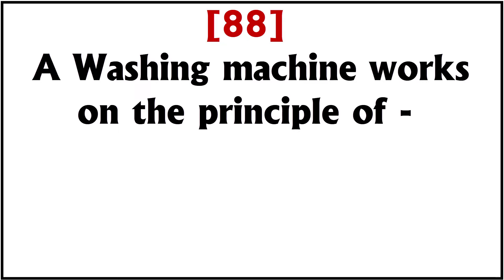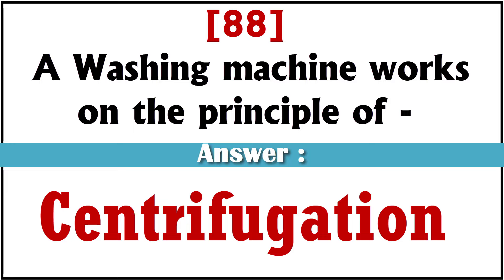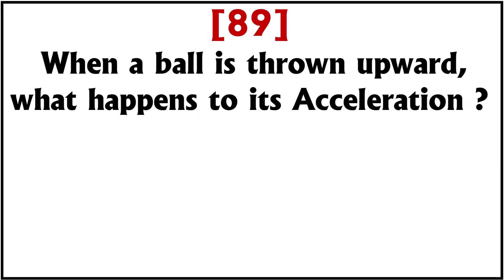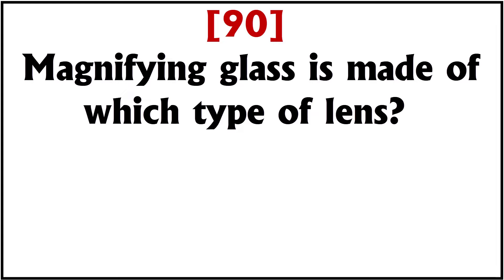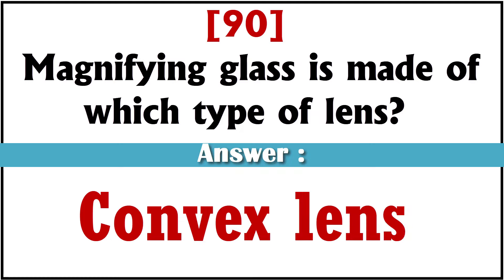A washing machine works on the principle of? Answer: Centrifugation. When a ball is thrown upward, what happens to its acceleration? Answer: It remains constant. Magnifying glass is made of which type of lens? Answer: Convex lens.